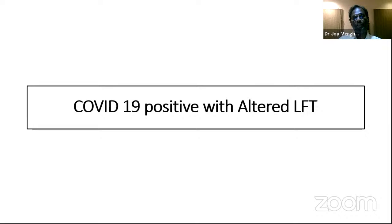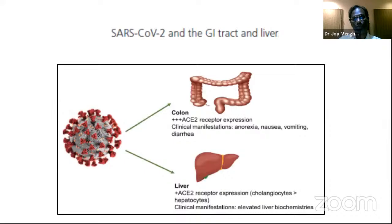Now we have enough knowledge acquired over the last year about COVID-19. We know that SARS-CoV-2 viral particles attach to the ACE2 receptor in the respiratory system — that is the entry point — causing the cytokine storm. The same ACE2 receptor is also present elsewhere in the body.